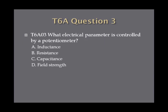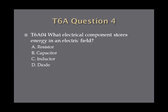Question 3: What electrical parameter is controlled by a potentiometer? A, inductance. B, resistance. C, capacitance. Or D, field strength. Question 4: What electrical component stores energy in an electric field? A, resistor. B, capacitor. C, inductor. Or D, diode.